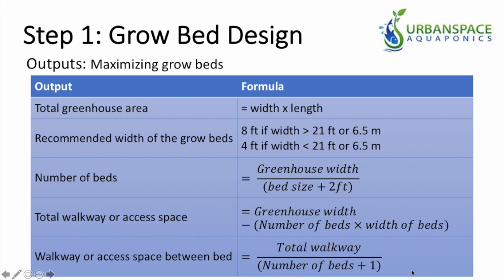The second thing is you need to know what width of grow bed you can use in your greenhouse. The width of the bed depends on the size or width of the greenhouse you've decided to use. The recommended width is: if your greenhouse is bigger than 21 feet (6.5 meters) in width, then the most efficient grow bed size is eight feet, which will maximize the space in your greenhouse.